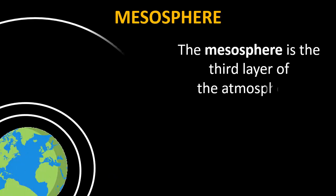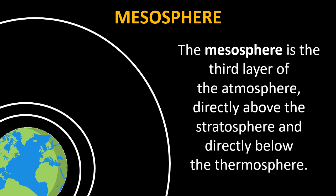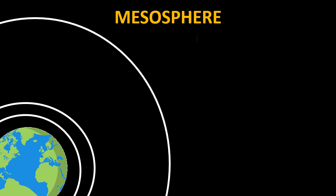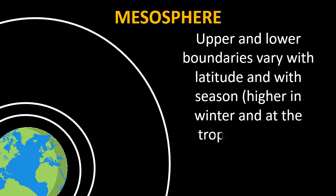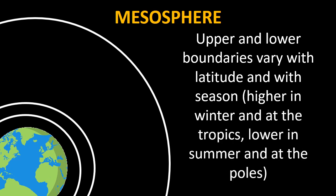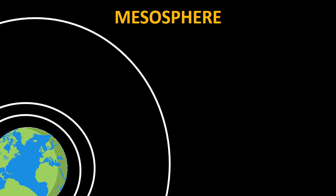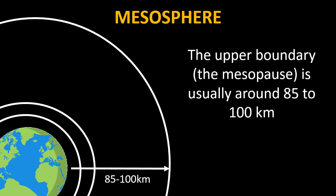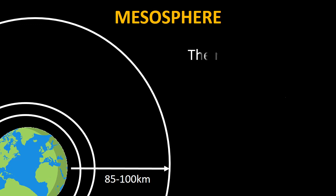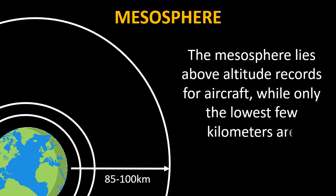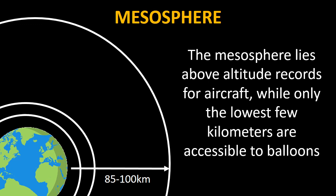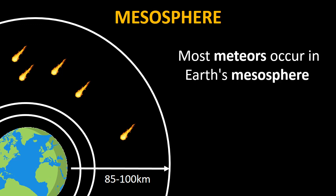The third layer is called the mesosphere. The mesosphere is directly above the stratosphere and directly below the thermosphere. The upper and lower boundaries vary with latitude and with the seasons — they are higher in winter and at the tropics, whereas they are lower in summer and at the poles. The upper boundary, called the mesopause, is usually around 85 to 100 kilometers. The mesosphere lies above altitude records for aircraft, while only the lowest few kilometers are accessible to balloons. Most meteors occur in the earth's mesosphere. The meteors pass through the exosphere and thermosphere without much trouble because those layers don't have much air, but when they hit the mesosphere there are enough gases to cause friction and create heat, burning up in the mesosphere.